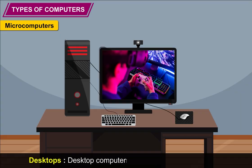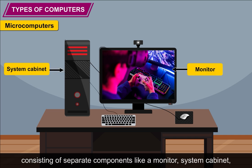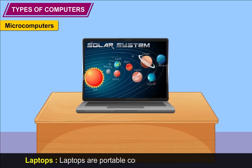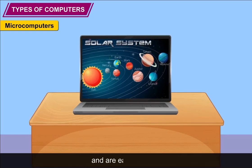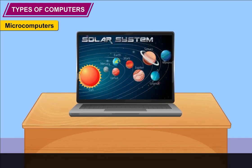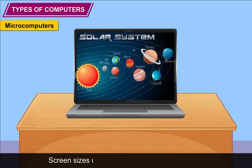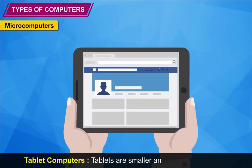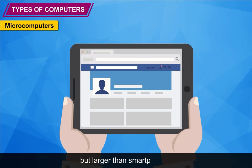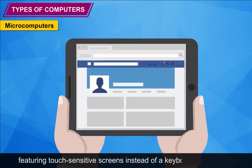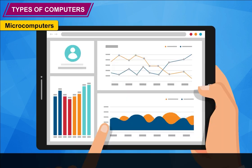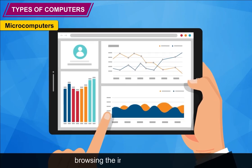The various types of microcomputers are: Desktops — designed to sit on desks, consisting of separate components like a monitor, system cabinet, keyboard, and mouse that work together as one unit. Laptops — portable computers that run on batteries, easy to carry, perform the same functions as desktops but are smaller, with screen sizes usually ranging from 13 to 15 inches. Tablet computers — smaller and lighter than laptops but larger than smartphones, featuring touch-sensitive screens instead of a keyboard and mouse, with common sizes of 7, 8, and 10 inches, often used for reading, watching movies, and browsing the internet.